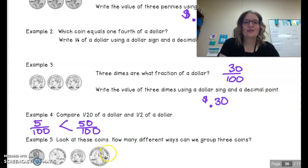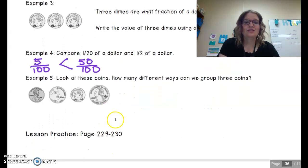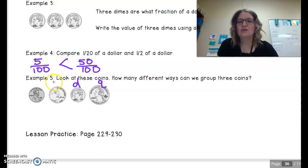Now, finally, we get to do some groups or some combinations where order doesn't matter. We want to group these coins. We've got a quarter, we've got a dime, we have a nickel, and we have a penny.